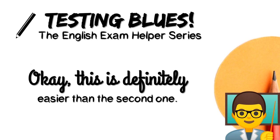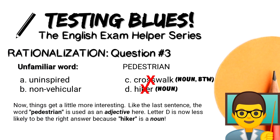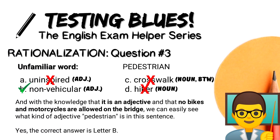Okay. This is definitely easier than the second one. Context clues time. The question clearly says 'bridge,' which easily eliminates letter C because a crosswalk is not a bridge. Now, like the last question, the word 'pedestrian' is used as an adjective here. Letter D is less likely because 'hiker' is a noun. With the knowledge that it is an adjective and that no bikes and motorcycles are allowed on the bridge, we can easily see what kind of adjective 'pedestrian' is. Yes, the correct answer is letter B.